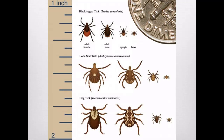The Ixodes tick exists in various stages. In early spring you see the larvae — extremely tiny compared to a dime. As the season progresses you see more mature ticks, from nymphs to adult males to adult females. This time of year in warmer southeastern states there may be some tick activity.